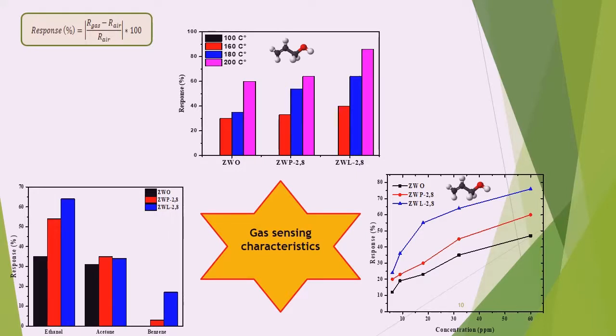The response of zinc oxide without oil and with lavender and paraffin sensors to various concentrations of ethanol at 180 degrees Celsius shows that the response increases with increasing ethanol concentration, with great improvement for zinc oxide with lavender 2.8. It can be observed that the increase of the response depends nearly linearly on gas concentration in the range of 60 ppm. The gas response of these sensors against ethanol, acetone, and benzene is shown.